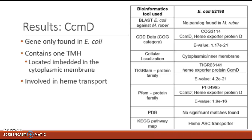As seen here, CCM-D is found embedded in the cytoplasmic membrane and contains only one transmembrane helix. This allows it to move along the membrane if needed and better assist CCM-A with the heme transfer to CCM-E. Additionally, the domains and families with the highest hit for B-2198 all link the gene with CCM-D, further confirming its function and place in the mechanism for the biosynthesis of cytochrome C.